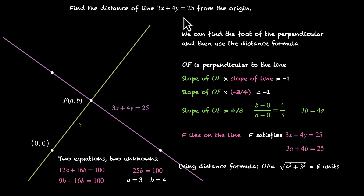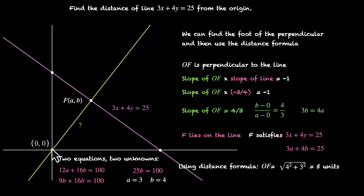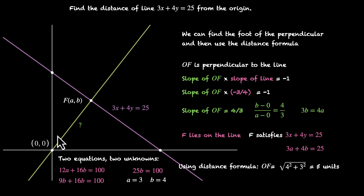This is our first example. We're trying to find the distance of this line from the origin. This is the origin, this is the line, this is the foot of the perpendicular. We try to find OF — the length of this perpendicular. We find the coordinates of F using two things: F lies on this line and OF is perpendicular. Once we have the coordinates, we use the distance formula to find the length.